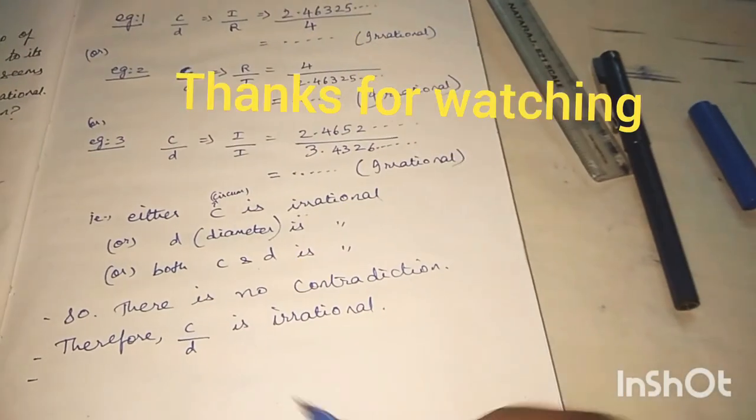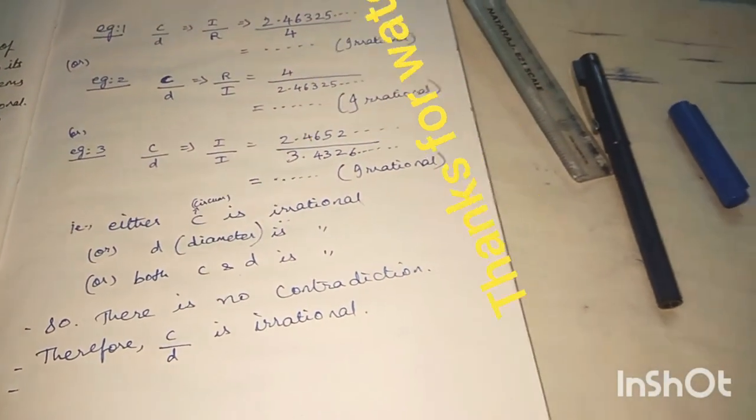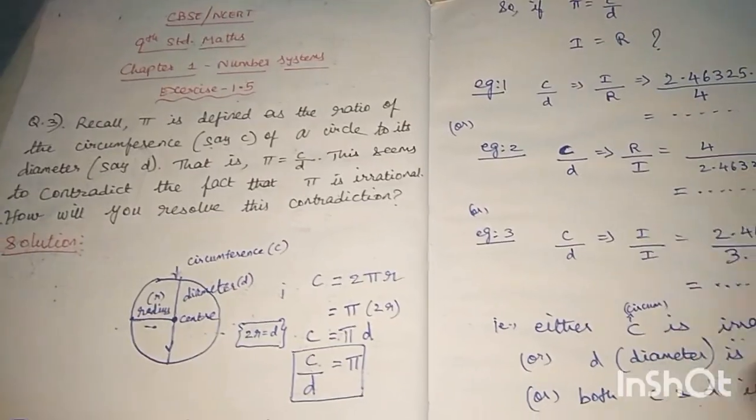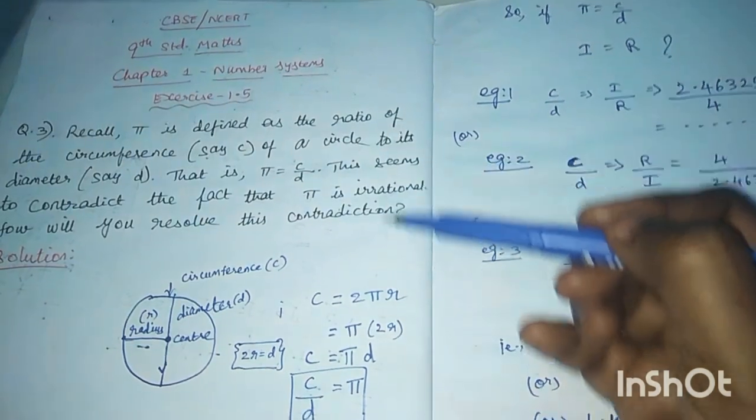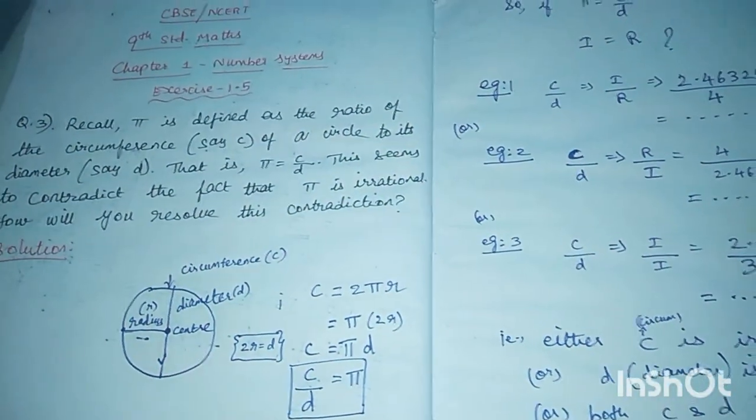Hence pi is irrational, and there is no contradiction. The sum is complete. Thank you friends.